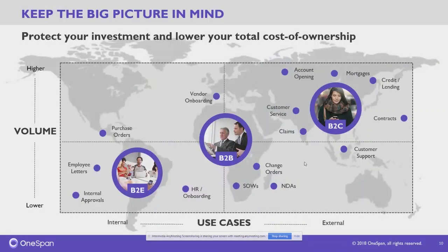When assessing return on investment, OneSpan identifies three categories based on 25 years of experience: B2E (inside the organization), B2B (business customers), and B2C (consumers). As you scale outside the organization you get a bigger bang for your buck, and scaling to consumers — which is high volume but also higher legal risk — yields the highest return on investment.